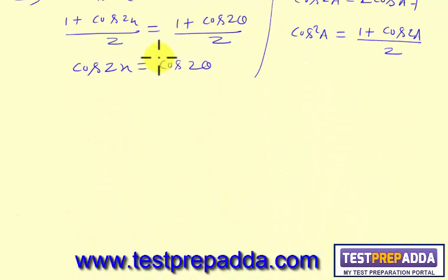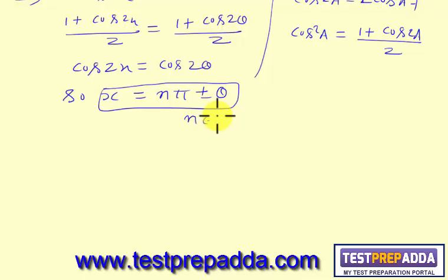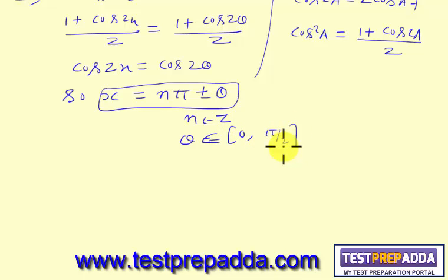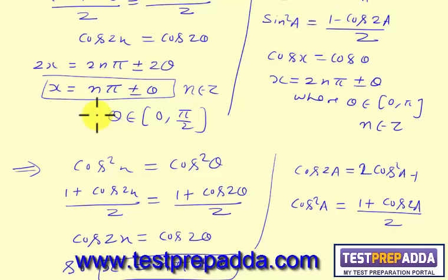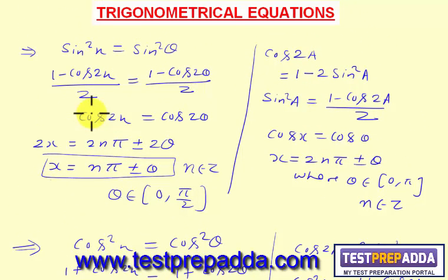So the general solution for cos²x = cos²θ is also x = nπ ± θ, where n belongs to integers and θ ∈ [0, π/2]. Same solution as we derived for sin²x = sin²θ.